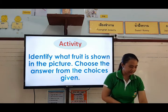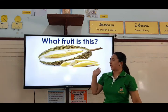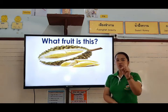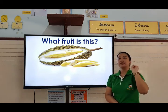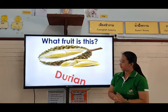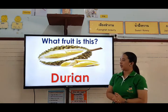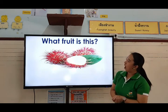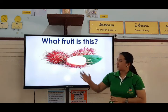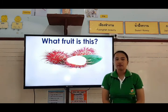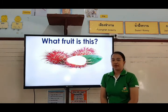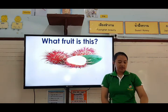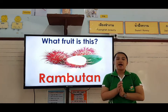Okay, the first picture — what fruit is this? Can you still remember? I will give you three seconds. One, two, three. What's the answer? It's a durian. Very good. This is what a durian looks like. Next picture — what fruit is this? It's color red and white on the inside. What fruit is that? Three seconds. One, two, three. It's a rambutan. Okay.